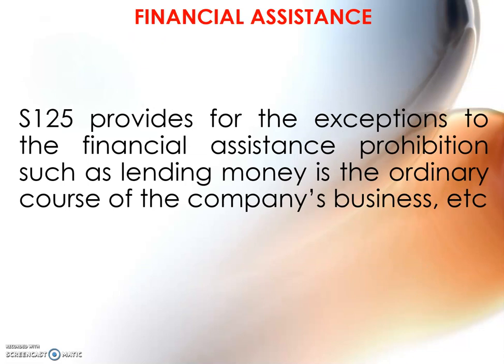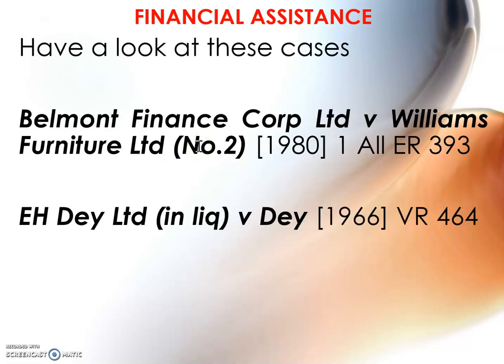There are a number of exceptions under section 125 — have a look at them yourself. One example is where the company is a lending company and the lending of money is its ordinary course of business — in that case, there is no problem. Please also look at two cases: Belmont Finance Corporation Ltd v Williams Furniture Ltd (No. 2) [1980] 1 All ER 393, and EHD Limited. We can discuss these during lectures and tutorials.